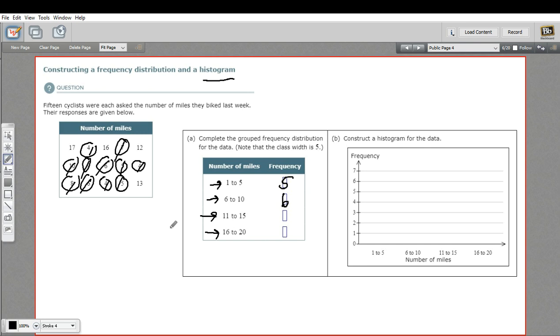All right, and now we have 11 to 15. So that 13 would count. The 12 would count. And that's it. So only two in that group. And then 16 to 20, we'll cross those out. There are these two left. So that's two in that group.